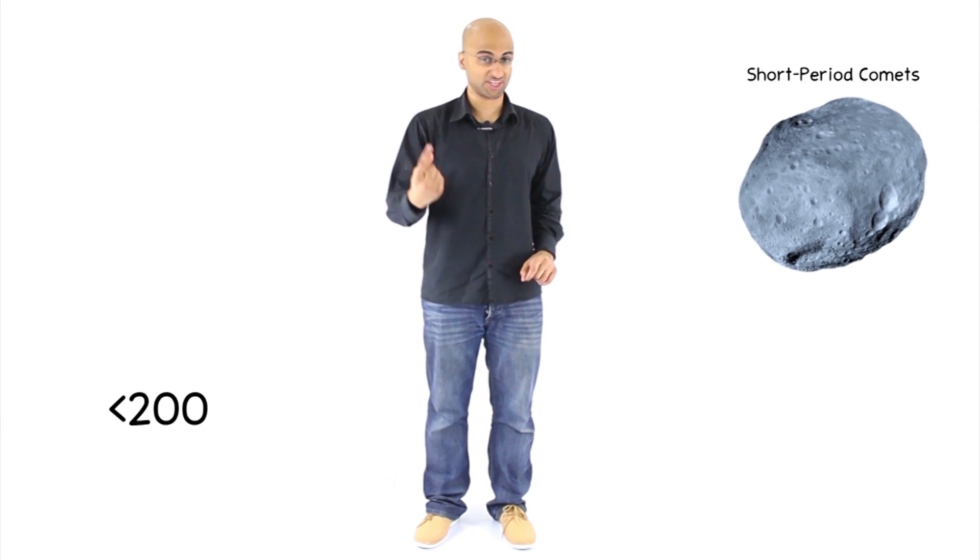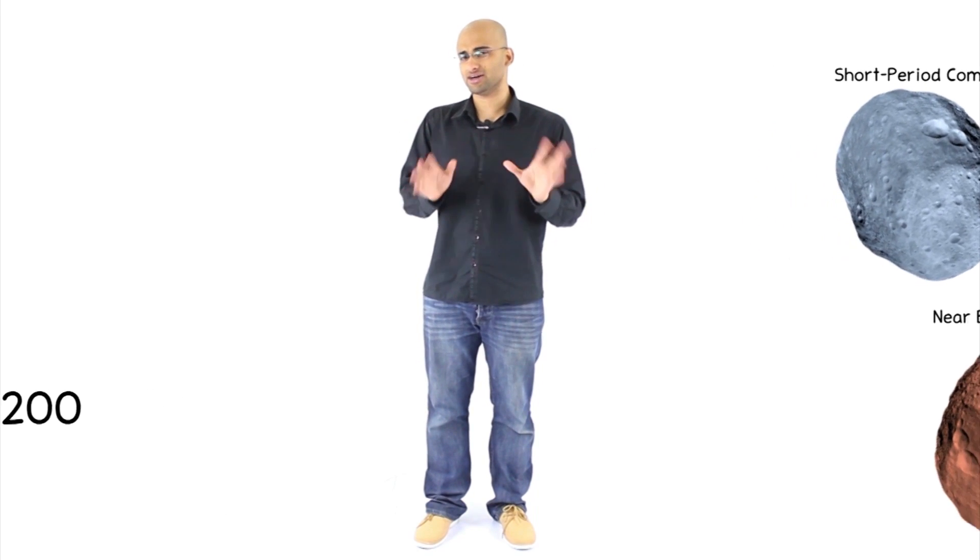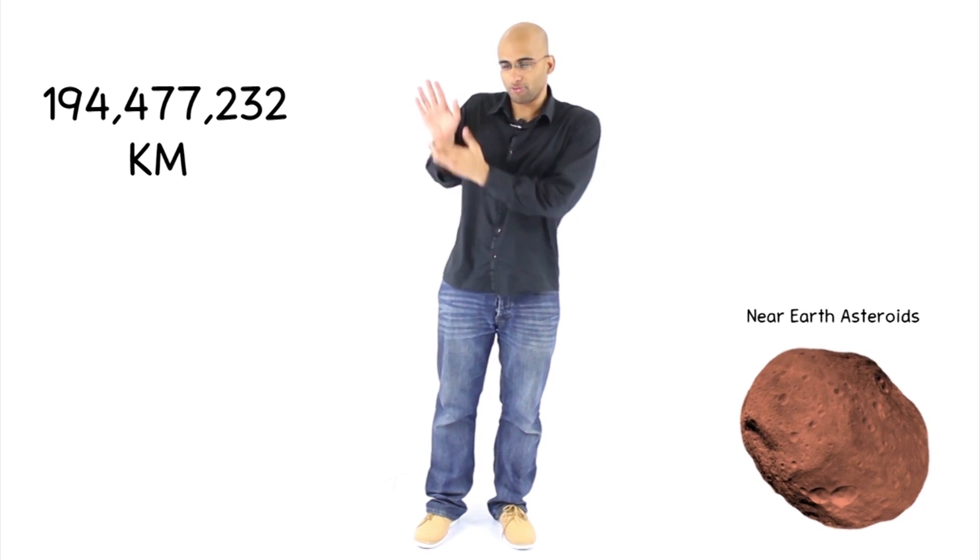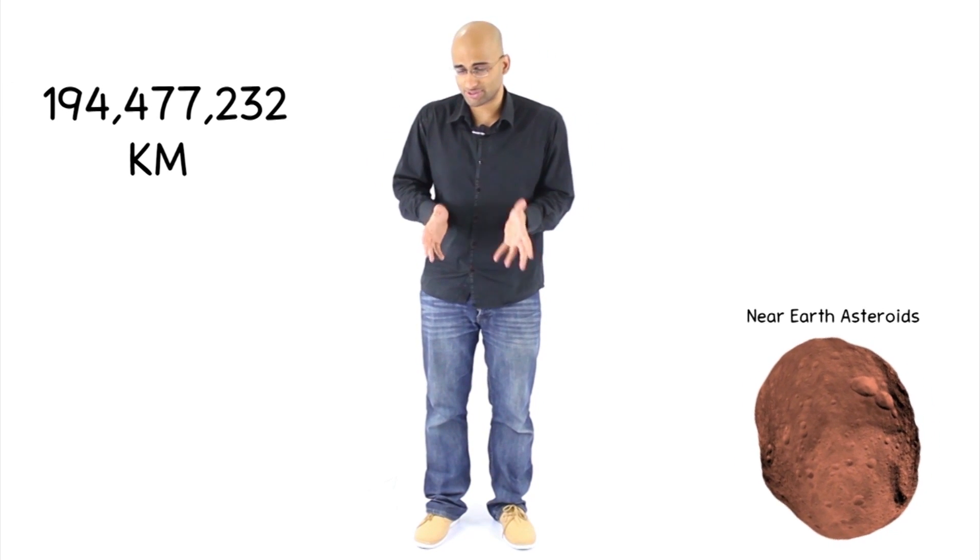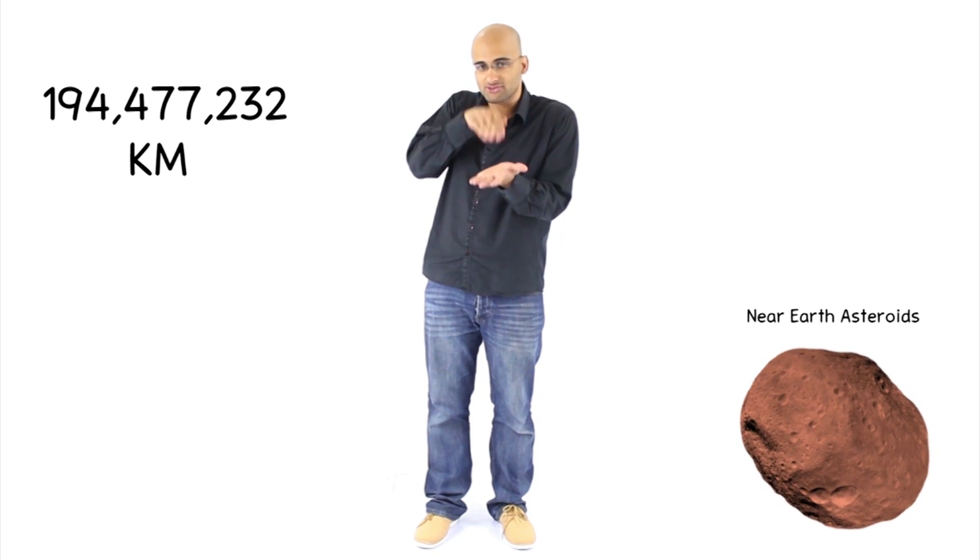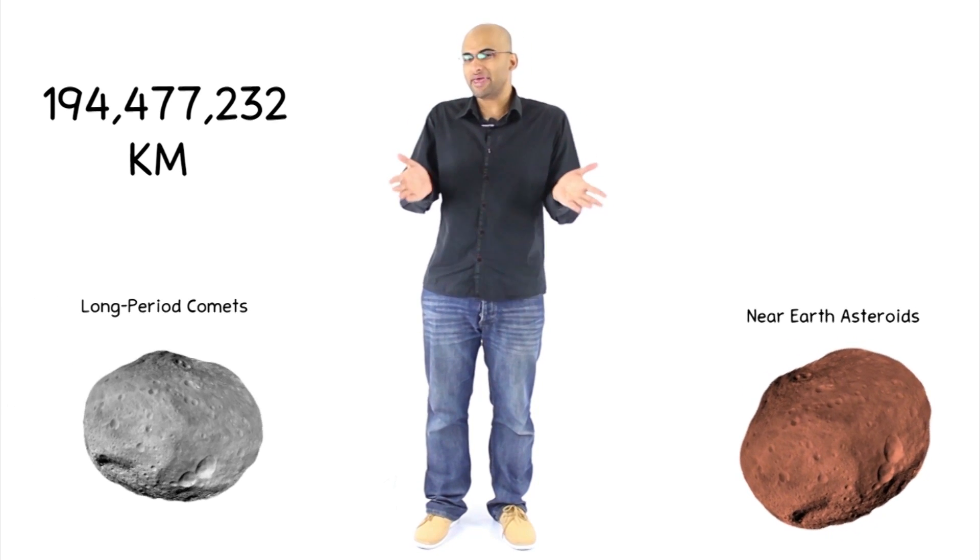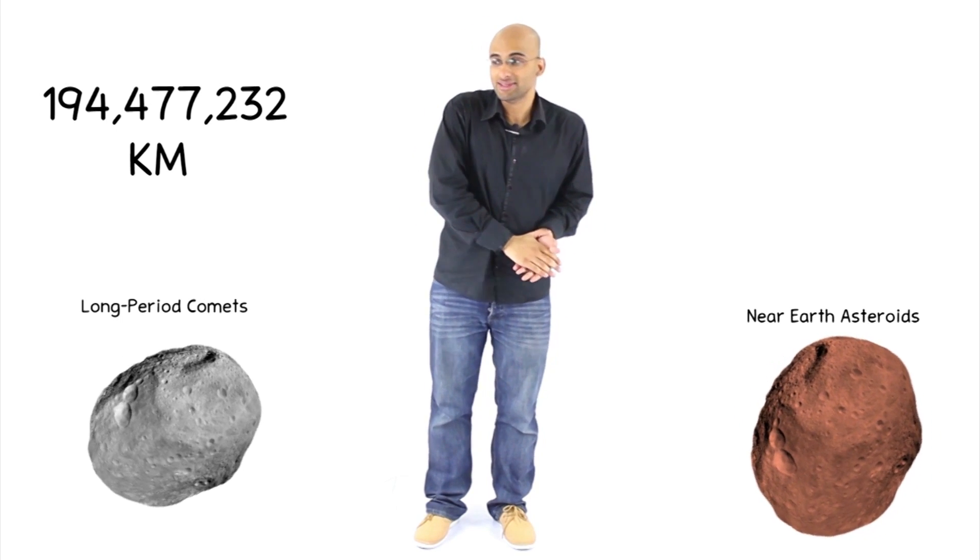The thing is, there are two very important bodies within the solar system that pose a threat to Earth as well. You have short period comets, which take around 200 years to make one orbit around the Sun or less. And you also have near-Earth asteroids, which are about this far away from Earth. This might look like a very big number, but in astronomical terms, that's like breathing on Earth's neck. That's how close they are. To put that in perspective, long period comets are about a thousand times, at least, farther than that.